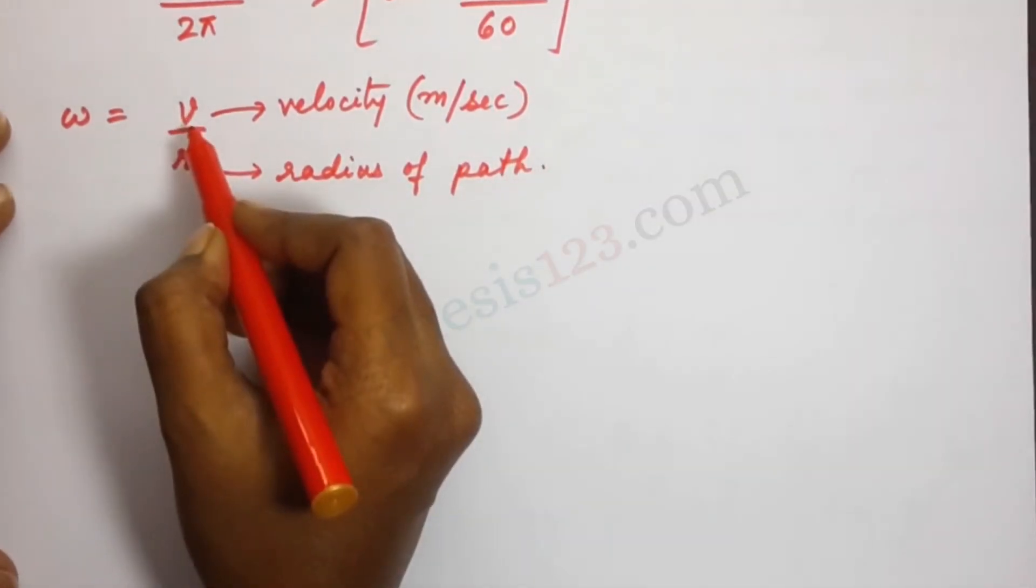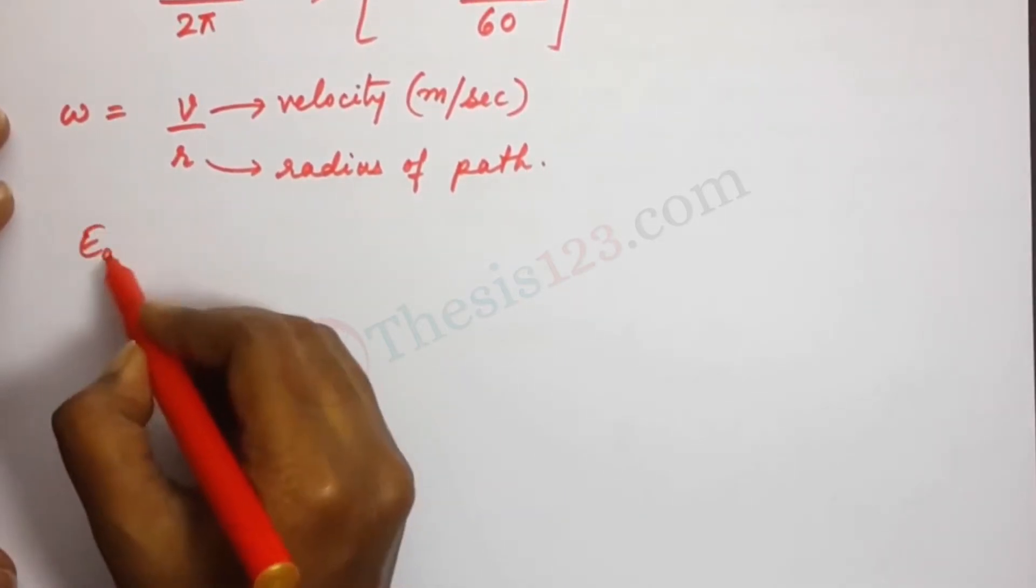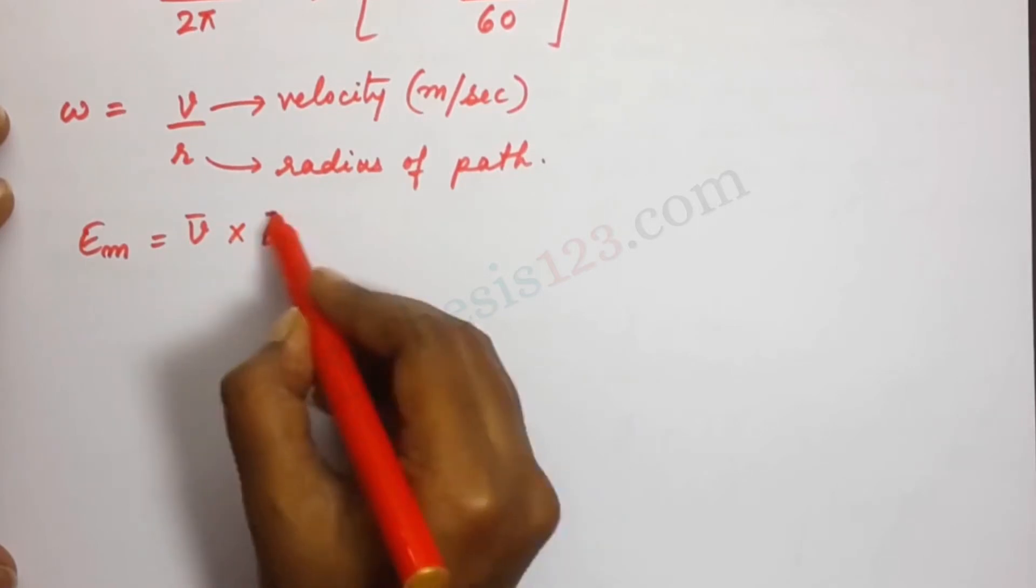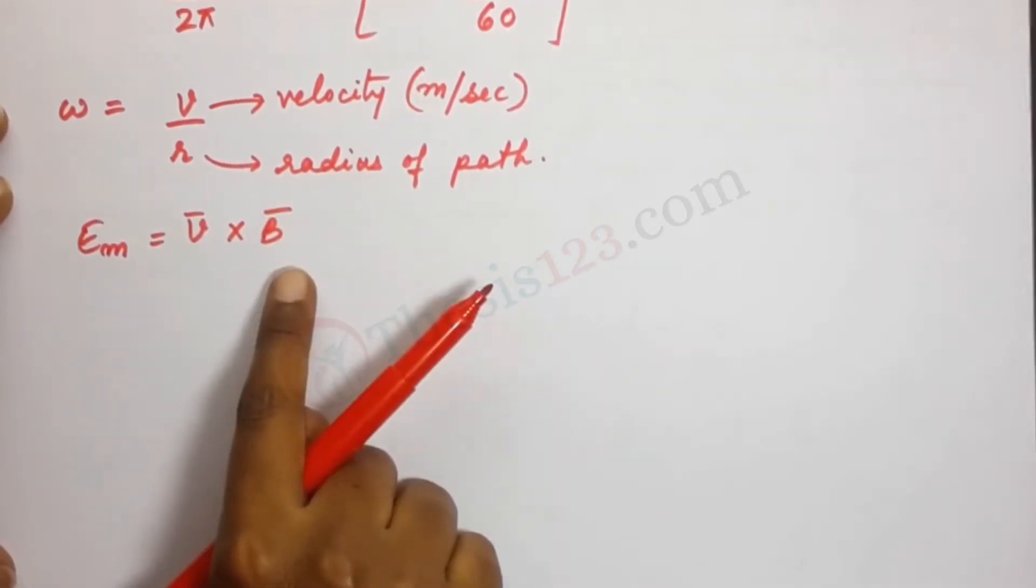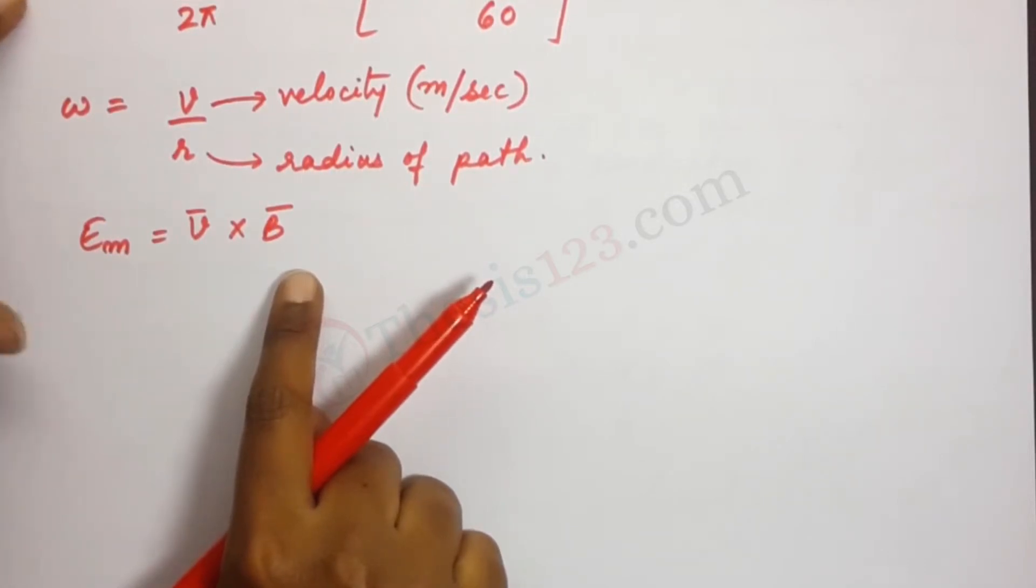Now V can be written in terms of E_m. E_m equals V bar cross B bar. Now this is the usual notation. So these are the expressions with which we will find out what N is.